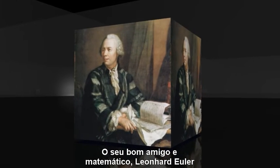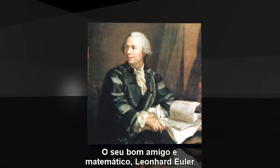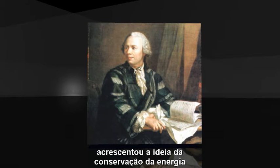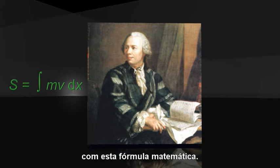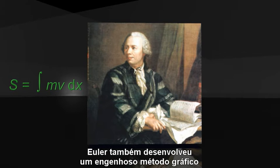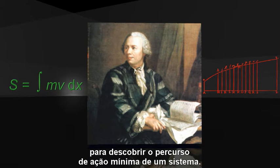His good friend and mathematician Leonard Euler added the idea of conservation of energy, and made least action an exact dynamical theorem with a precise mathematical form. Euler also developed an ingenious graphical method to find the path of minimum action for a system.